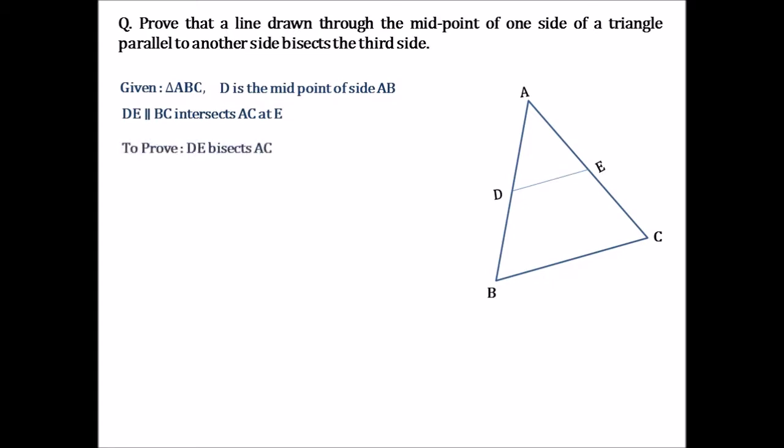We need to prove that DE bisects AC, that is AE and EC is equal. Proof: since DE is parallel to BC that means we can use BPT which states that if a line is parallel to one side of a triangle then the other two sides are divided in the same ratio. So, we will have AD by DB equals to AE by EC.